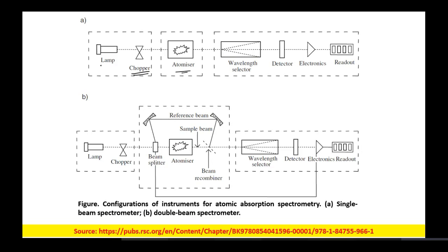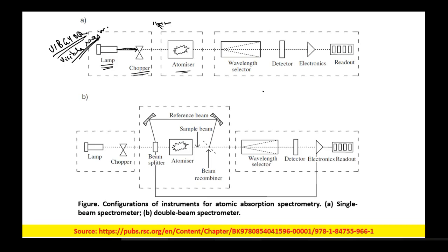When the lamp generates light in the VIBGYOR region — the visible region — you get a continuous spectrum. What does the chopper do? For a particular period of time it sends the light, then stops the light band, then sends it again. During the stop time, it records the signal, enabling it to stop the lamp glare from being recorded in the detector.